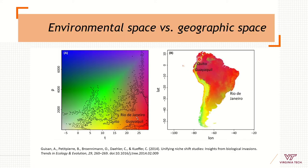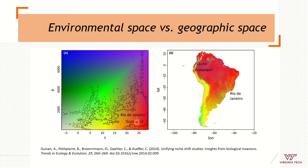This is another example of the differences between environmental space and geographic space. Quito and Guayaquil, two important cities of Ecuador, are very close geographically, however both locations are far from Rio de Janeiro in Brazil. If we think in environmental conditions like temperature and precipitation, we see that Rio de Janeiro and Guayaquil are very close environmentally, however Quito is far from Guayaquil in environmental conditions. This is because Rio de Janeiro and Guayaquil are coastal areas with high temperatures, while Quito has lower temperatures because it's located in the Andes mountains of South America.